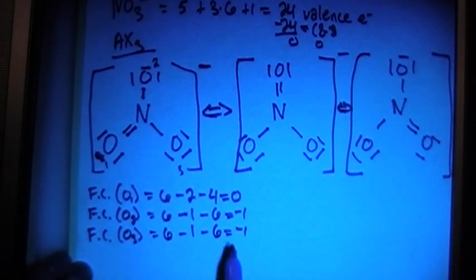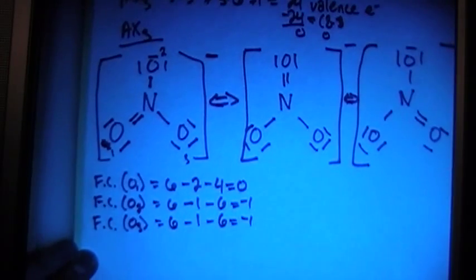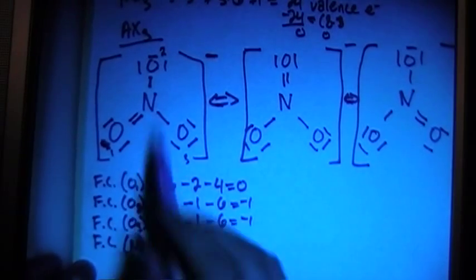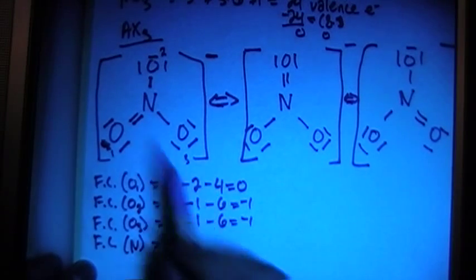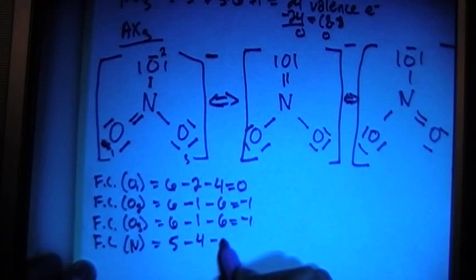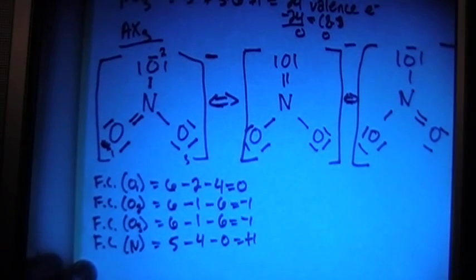And then we can do the formal charge on the center nitrogen, which is 5 valence brought in, minus 4 bonds, minus zero non-bonding electrons, which is a plus one formal charge.